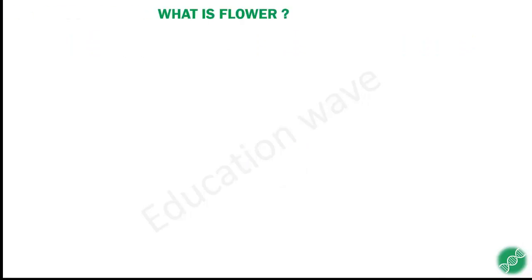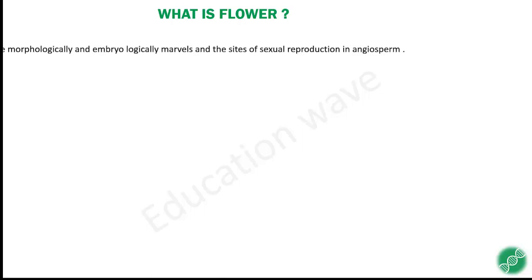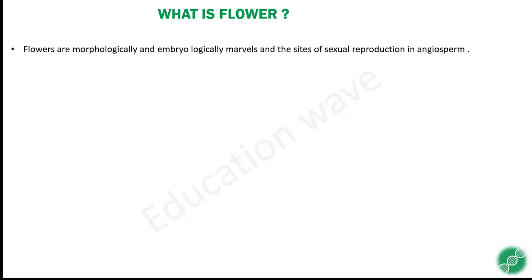What is a flower? We are going to study sexual reproduction in flowering plants, so first of all we should know what a flower is. Flowers are morphologically and embryologically remarkable and are the sites of sexual reproduction in angiosperms. You should remember that flowers are the site of sexual reproduction.